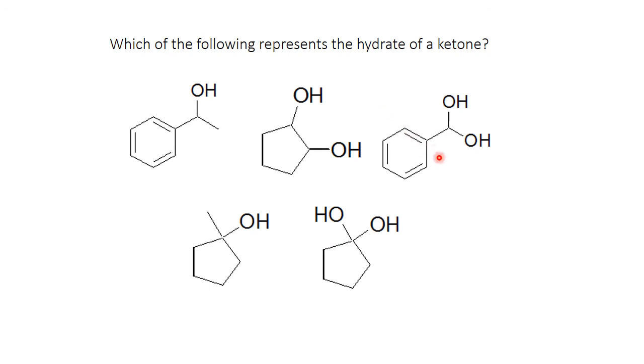Which of the following is the hydrate of a ketone? Well, for you to have a hydrate, you have to have what's called a geminal diol. This is not a diol. It's just a regular alcohol, so it cannot be a hydrate. This is a diol, but it's not geminal. It's vicinal. The alcohols have to be on the same carbon, so this is not a hydrate. This is a monoalcohol, so it cannot be a hydrate.